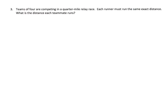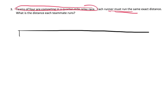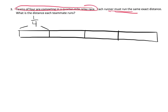Our last problem: teams of four are competing in a quarter-mile race. Each runner must run the exact same distance — what is the distance each teammate must run? They're running a quarter-mile, so let me draw a whole mile and mark out a quarter-mile. We have four people running that quarter-mile, each running an equal amount. Each quarter is cut into four pieces, making one whole 16 parts — 16 sixteenths — and one of those is one-sixteenth. So each person runs one-sixteenth of a mile.